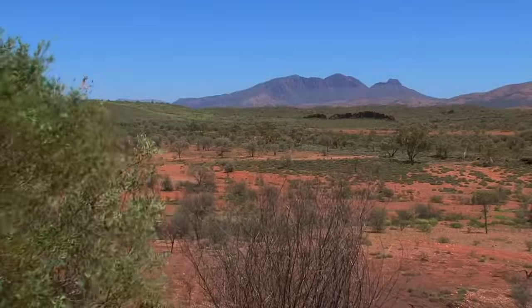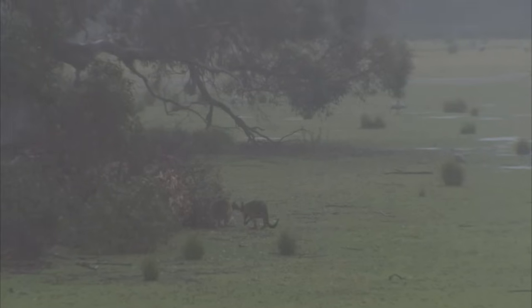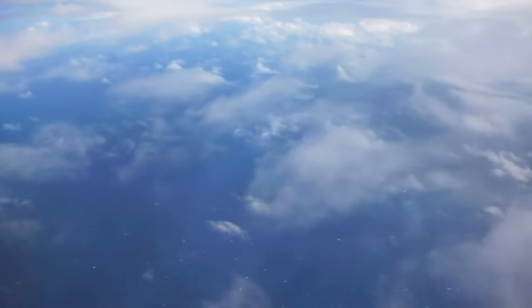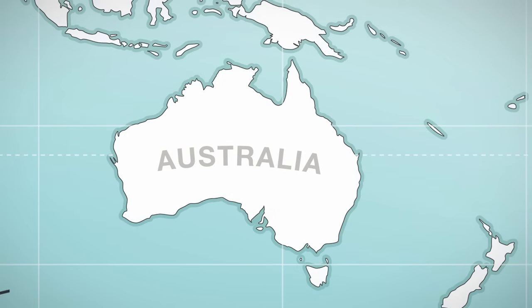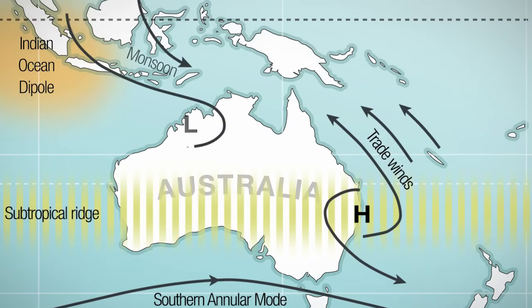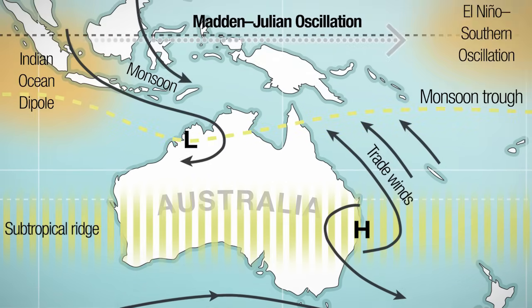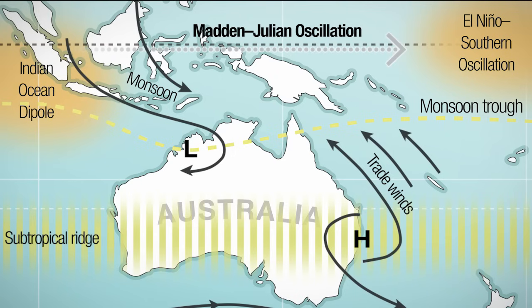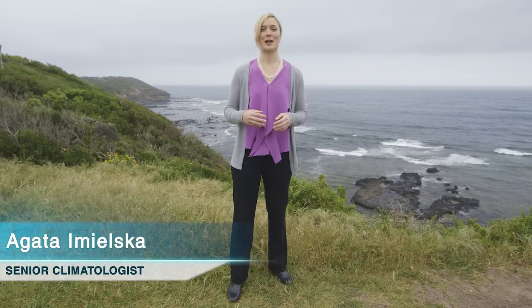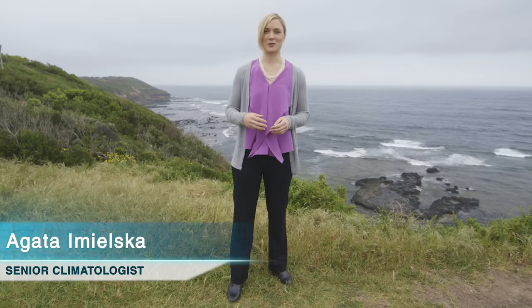Australia's highly variable climate is influenced by the broad patterns in the oceans around it and the atmosphere above it. Some of these patterns are not only more obvious than others but also predictable. We call these our climate drivers. One of our strongest climate drivers is the El Niño Southern Oscillation, or ENSO.